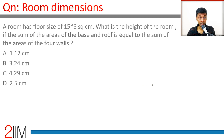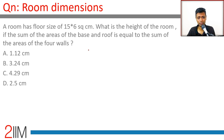A room has a floor size of 15 by 6 square centimeters. What is the height of the room if the sum of the areas of the base and roof is equal to the sum of the areas of the four walls? The base and roof should be equal to the four walls. So let the height be h.